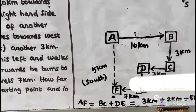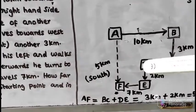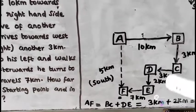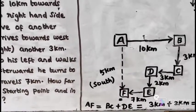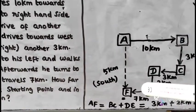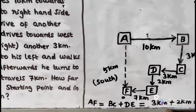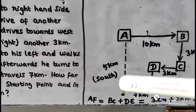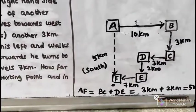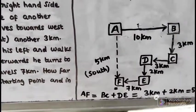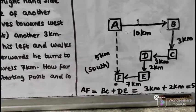From D, he turns left 2km reaching point E. Then right side turn, traveling 7km reaching point F. Now the question is, what is the distance from starting point A to destination F?